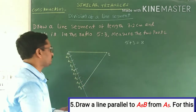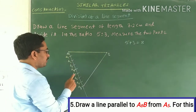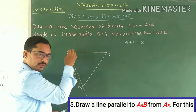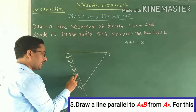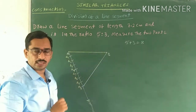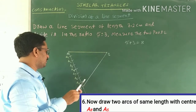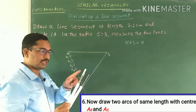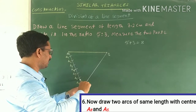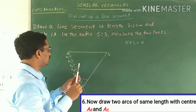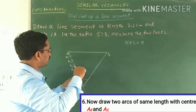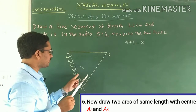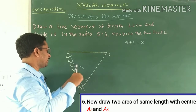We have to draw a line parallel to A8B from A5. Why A5? Because the first number in the ratio 5:3 is 5. So from A5 we draw a line parallel to A8B. To draw the parallel line: with center A8, draw an arc — no need to measure the length. Then using the same radius, draw an arc with center A5.